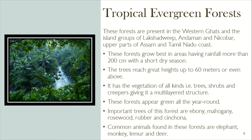Tropical Evergreen Forest: these forests are present in the Western Ghats and the island groups of Lakshadweep, Andaman and Nicobar, the upper part of Assam, and the Tamil Nadu coast. These forests grow best in areas having rainfall more than 200 centimeters with a short dry season. The trees reach great heights up to 60 meters or even above.